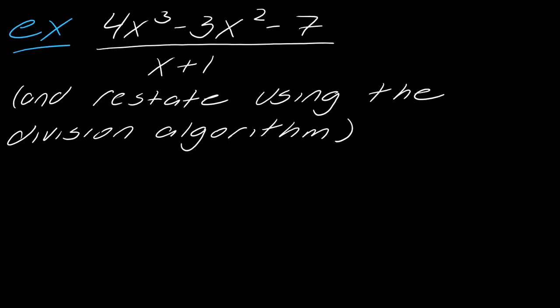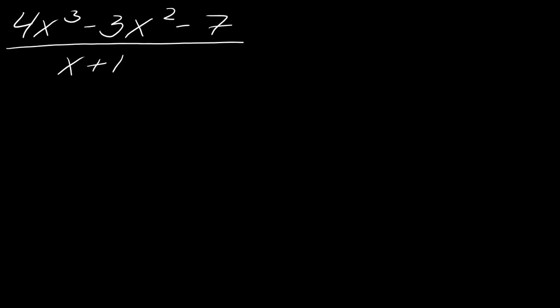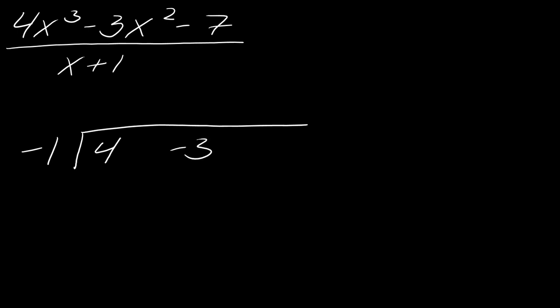Now let me show you another example using synthetic division. I've got 4x cubed minus 3x squared minus 7 divided by x plus 1, and then we'll restate using the division algorithm. To set up: on the outside you take the additive inverse of your divisor, so negative 1. When you set up your coefficients in descending order, I have 4 in the x cubed position, negative 3 in the x squared position. There's nothing for x, so you put a 0 in as a placeholder. And then the constant is negative 7.